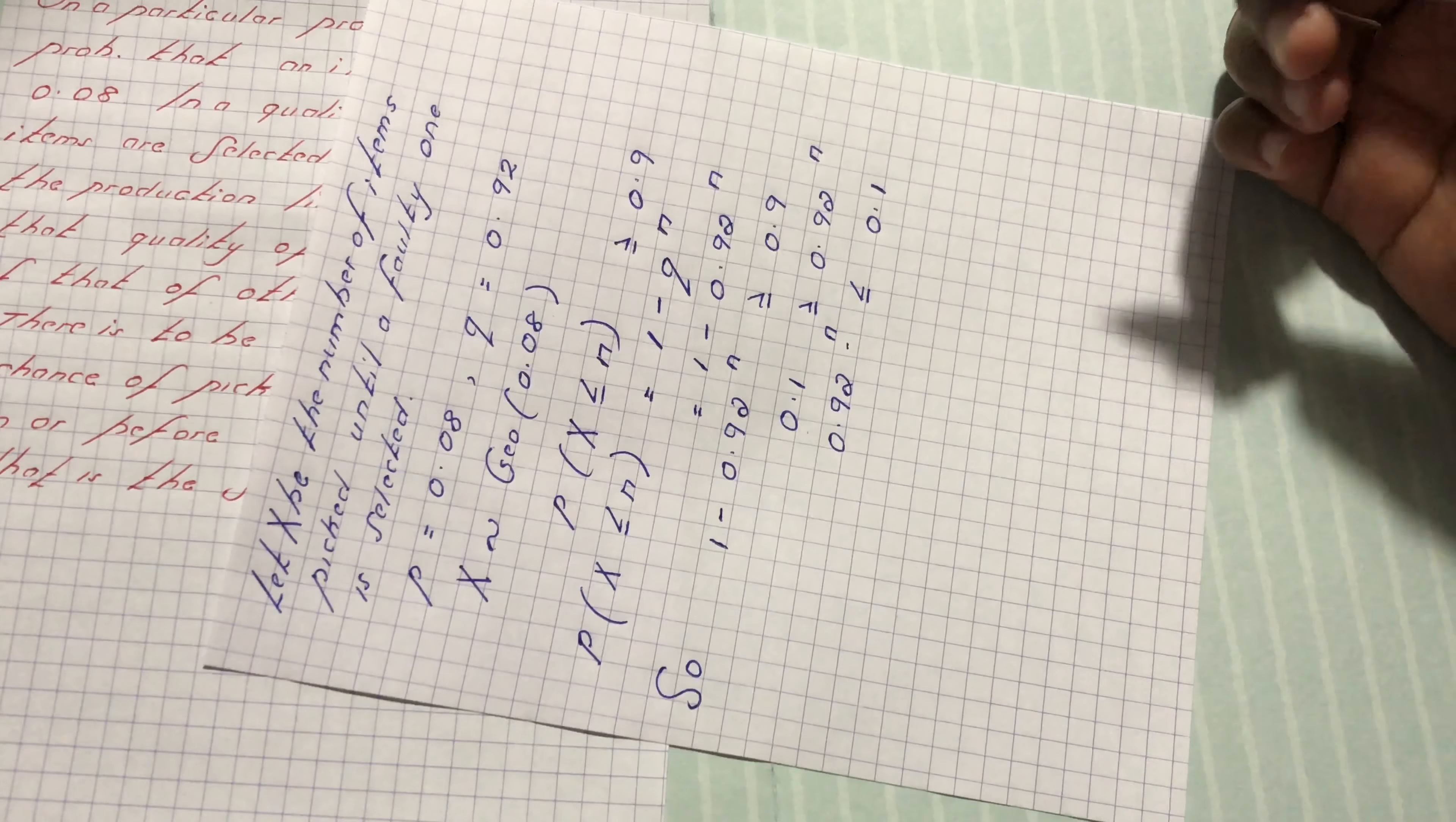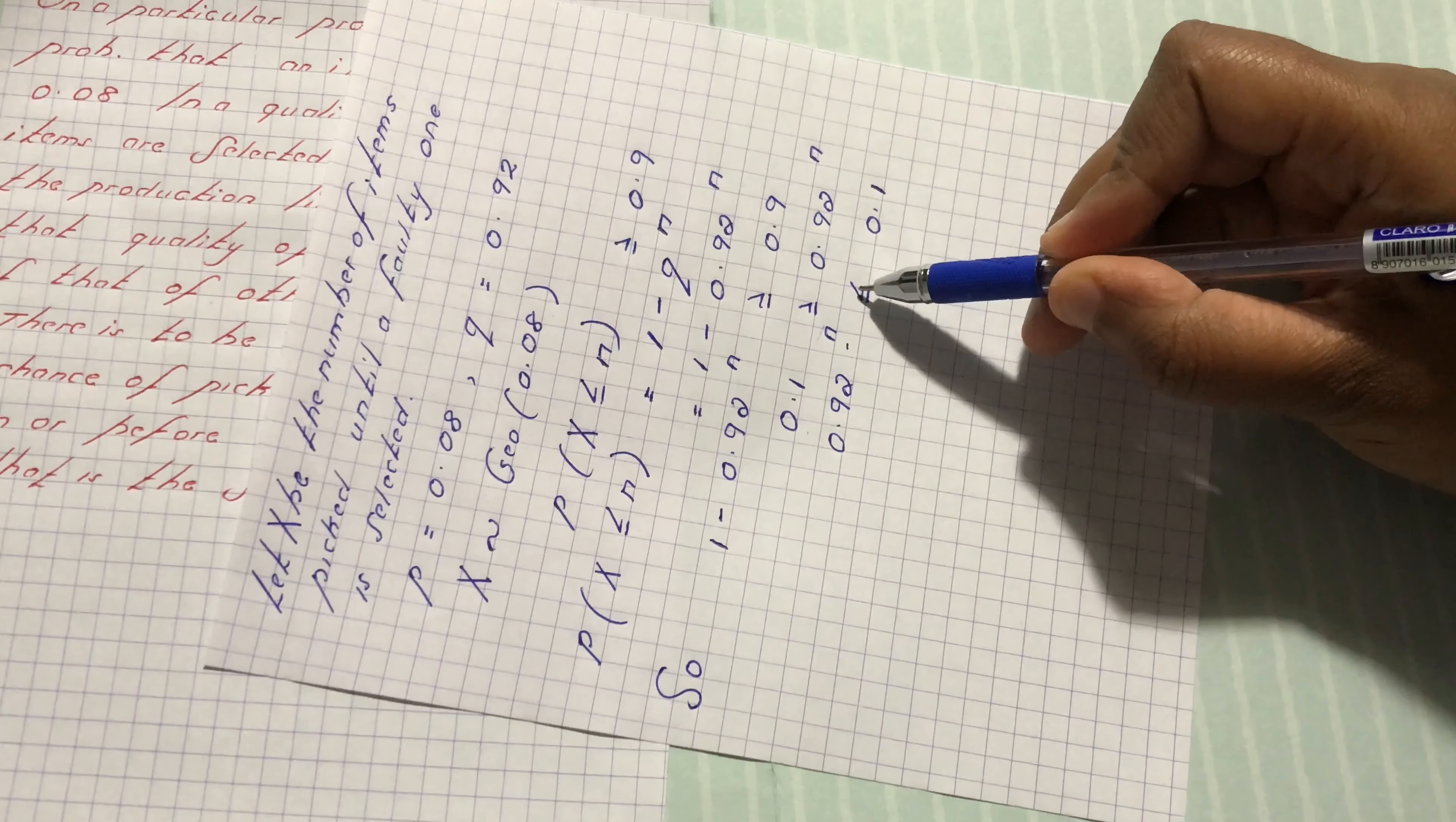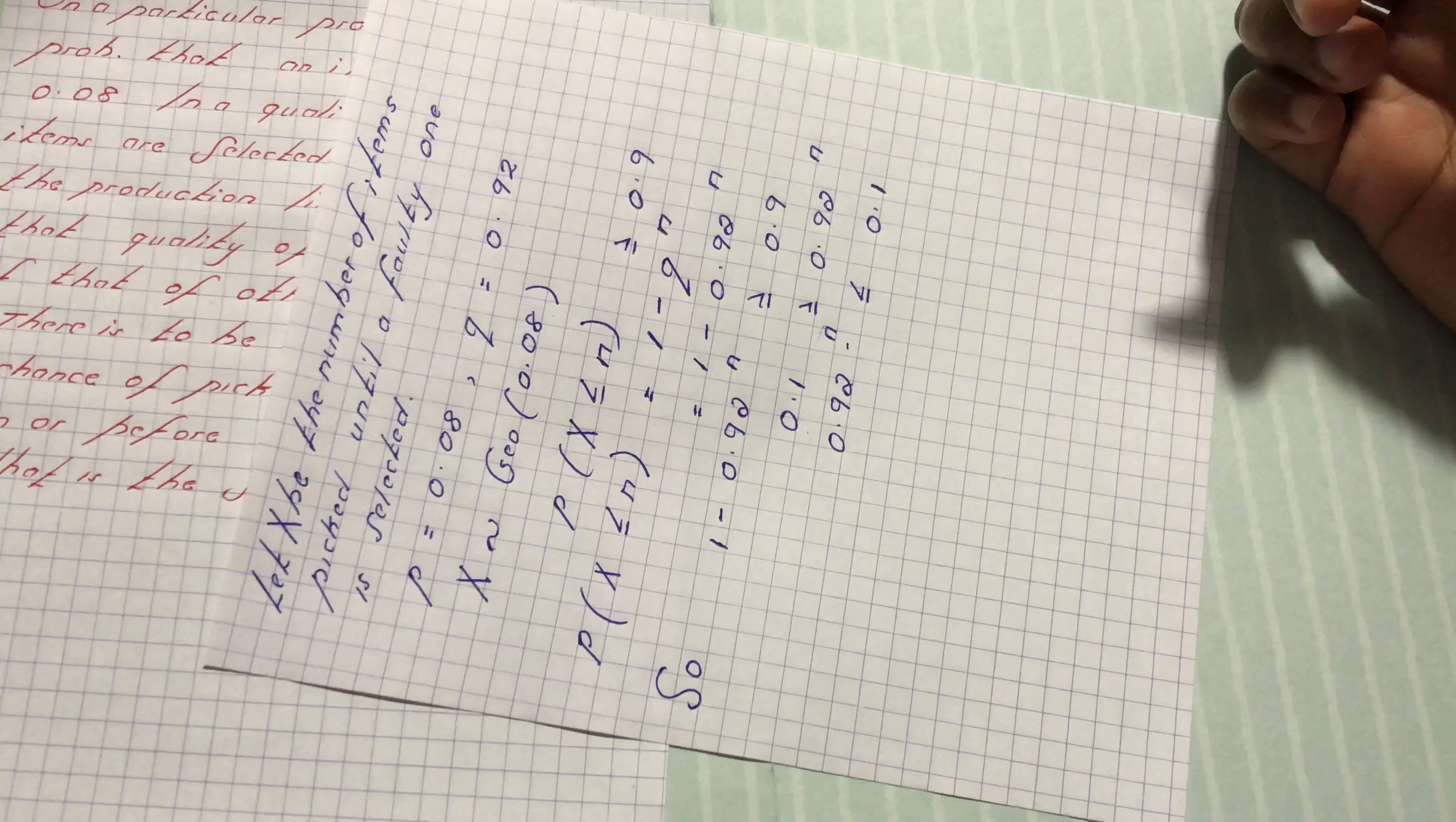Either you use trial and improvement where you choose number of n where this should be less or equal to 0.1, or we can simply take log to base 10 on both sides.